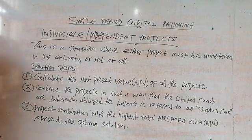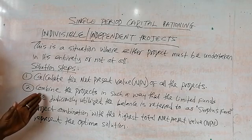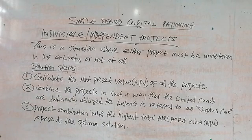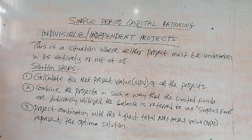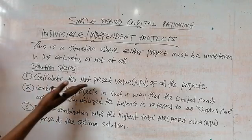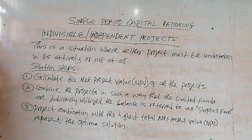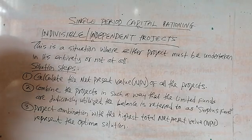After calculating the net present value of all the projects, the next step is to combine the projects in such a way that the limited funds are judiciously utilized. Specifically, after calculating the NPV of all the projects, you combine them so that you make use of all of the limited funds available.